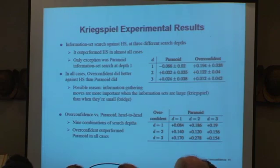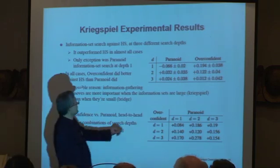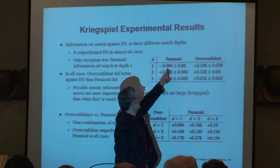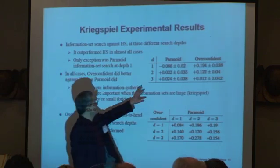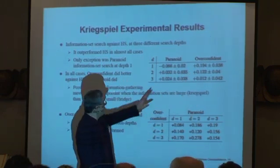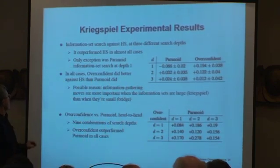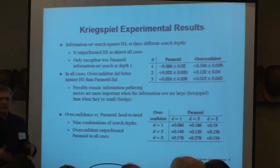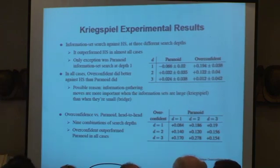In Kriegspiel, we played information set search against HS at three different search depths. It outperformed HS in almost all cases. The only exception was at depth one, where paranoid search did a little bit worse than HS. In all other cases, both models did better than HS. Overconfident was always doing better than paranoid. One possible reason — this is speculative — is that information-gathering moves are probably more important in Kriegspiel than in a game like Bridge, so it makes more of a difference to be able to do the information set search.